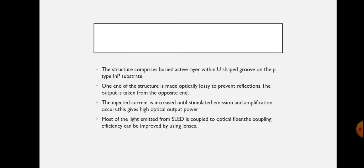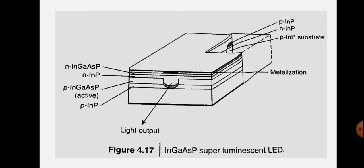The injector current is increased in the case of the superluminescent LED until we get stimulated emission and amplification. This process gives high optical power output. Most of the light emitted from the SLED is coupled to the optical fiber, and the coupling efficiency is improved by using lenses. The main advantage is that most of the power from this LED can be coupled to the fiber.